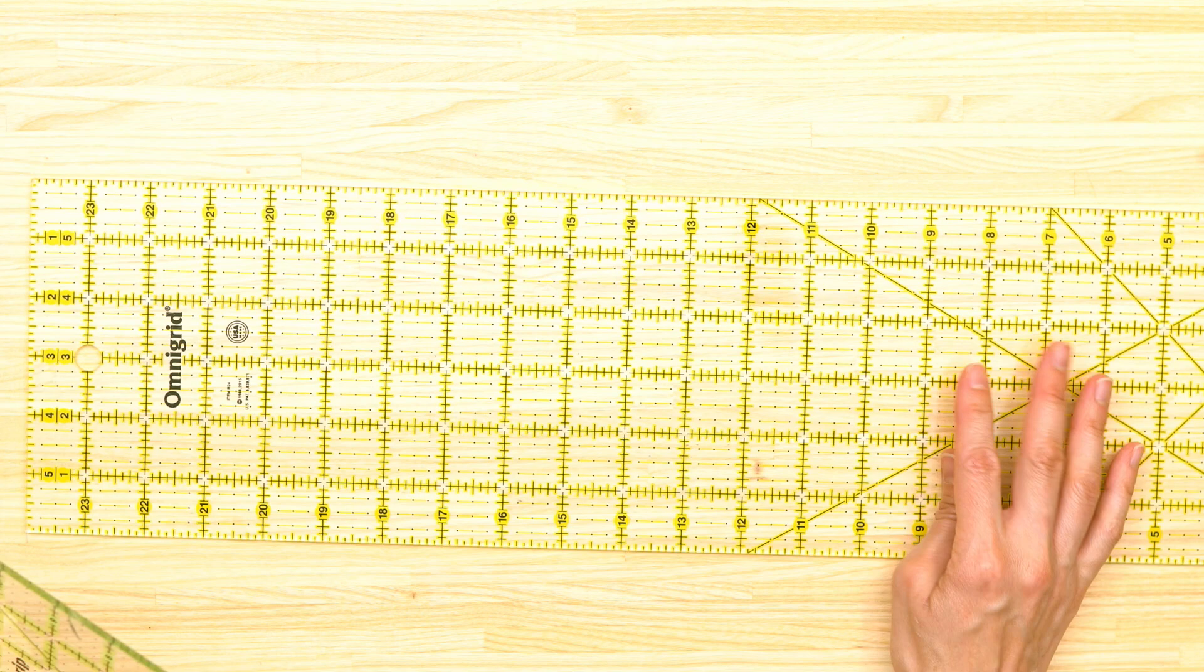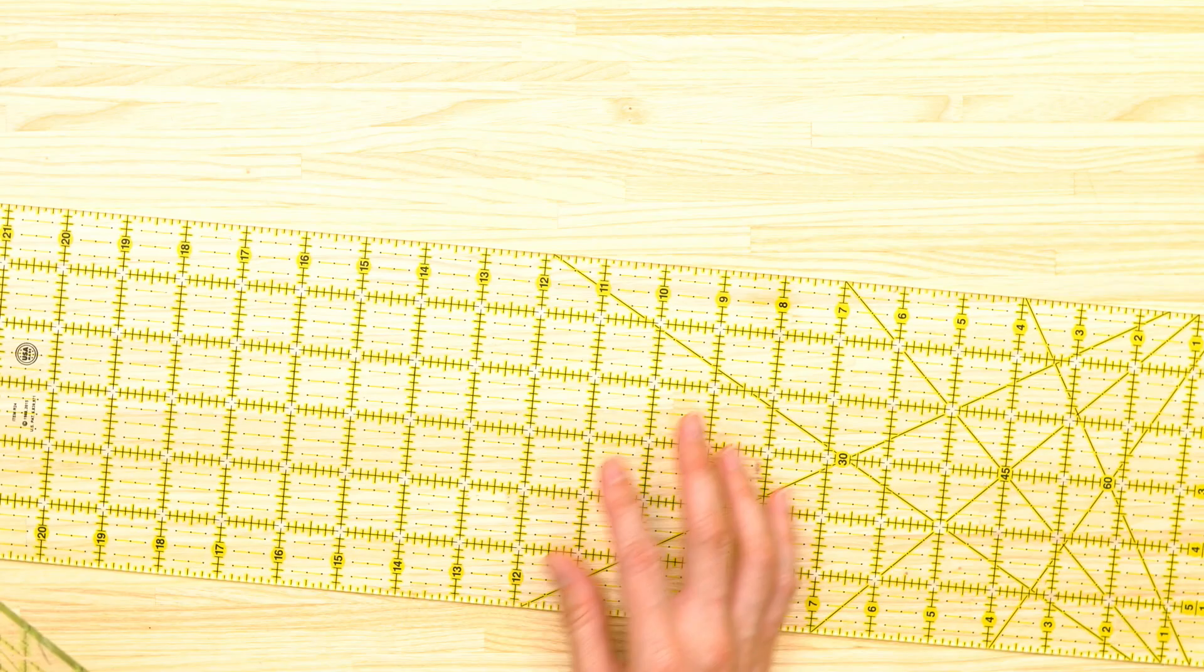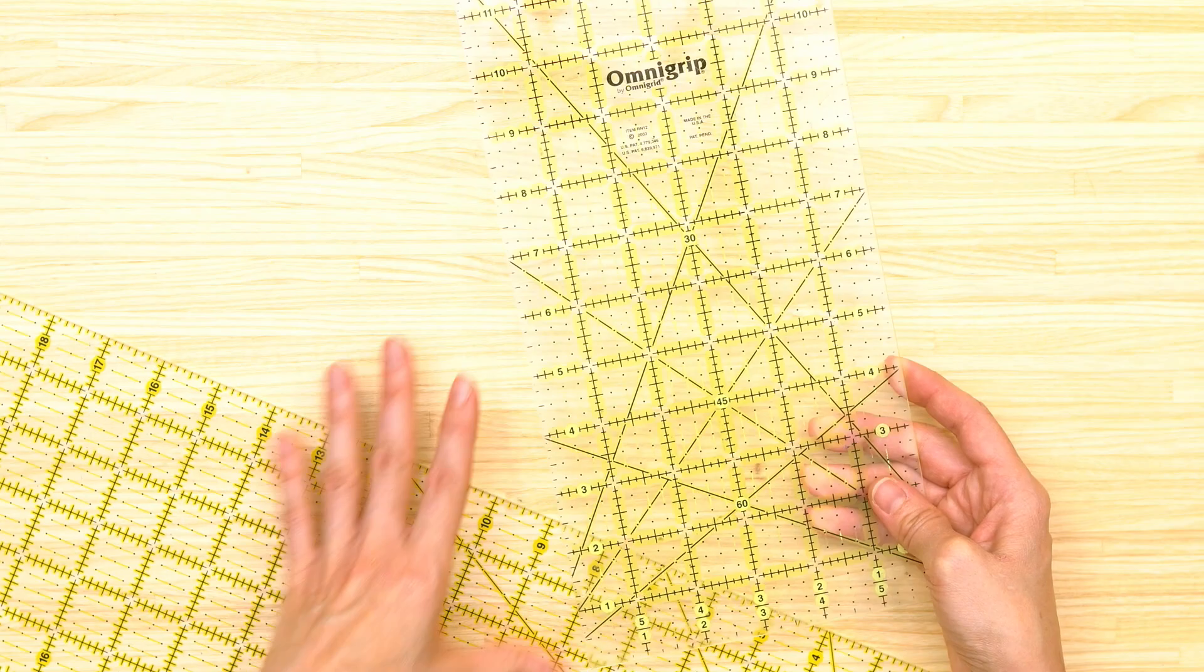I started off actually with a six and a half inch by twenty-four inch and I was always getting mixed up by that extra half inch and cutting things wrong all the time, so I swapped it out for an even six inch ruler. These are great for measuring squares or rectangles.